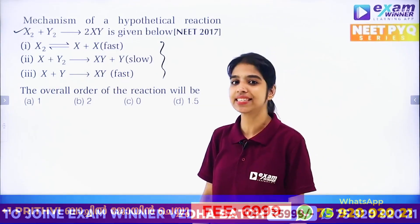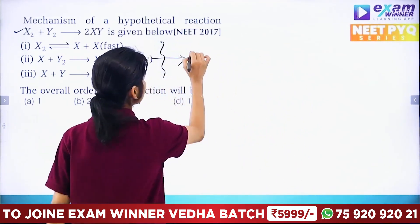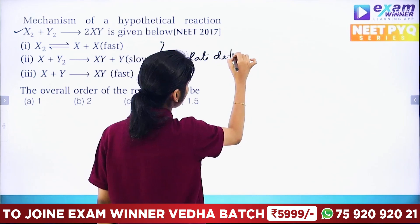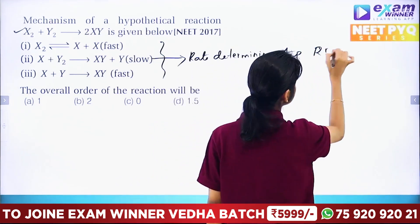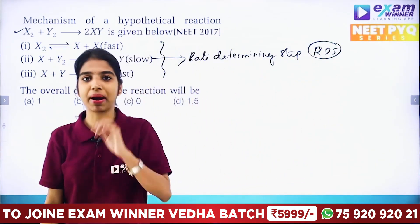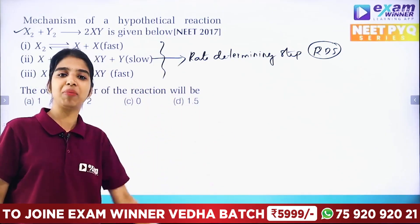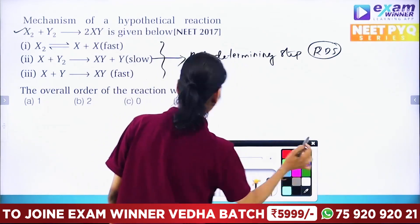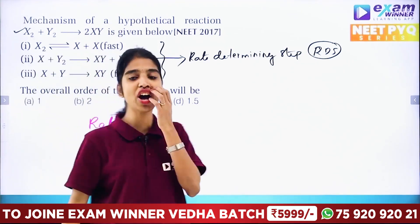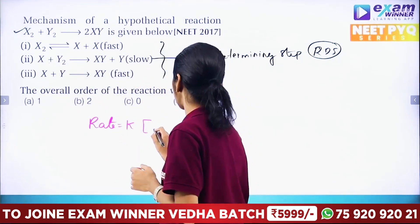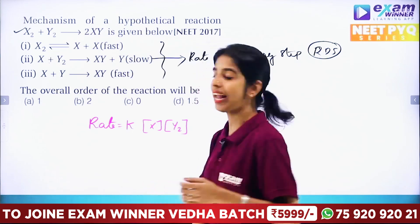In this reaction mechanism, the slowest step is the Rate Determining Step, or RDS. The second step is the slowest step, so it is the RDS. The rate is equal to the rate constant times the molar concentration of X, from the second step involving X₂.